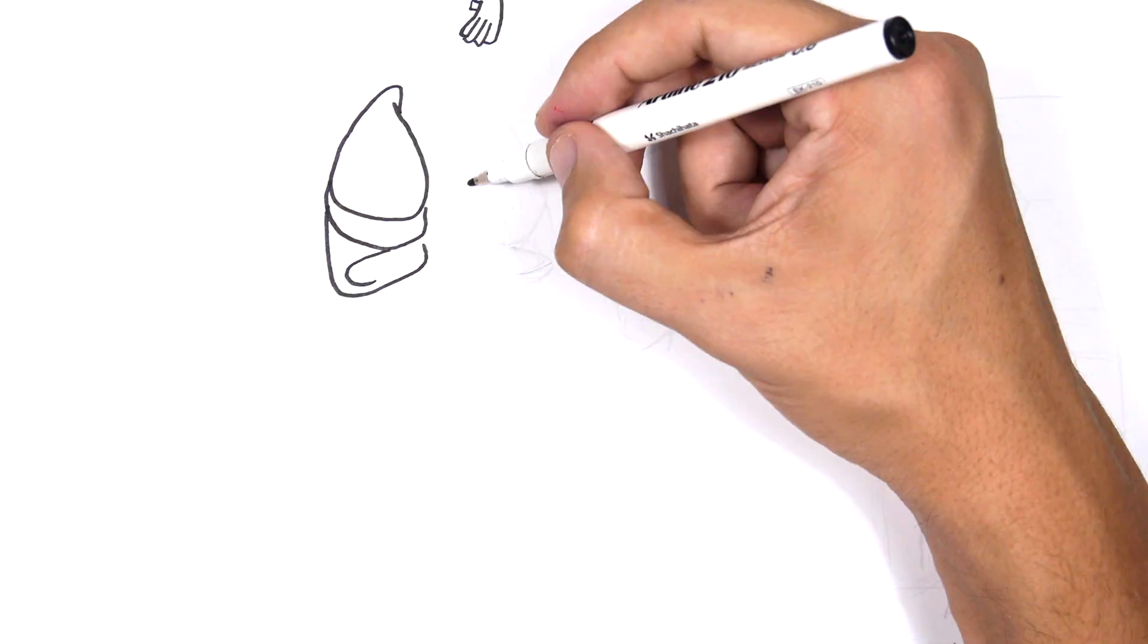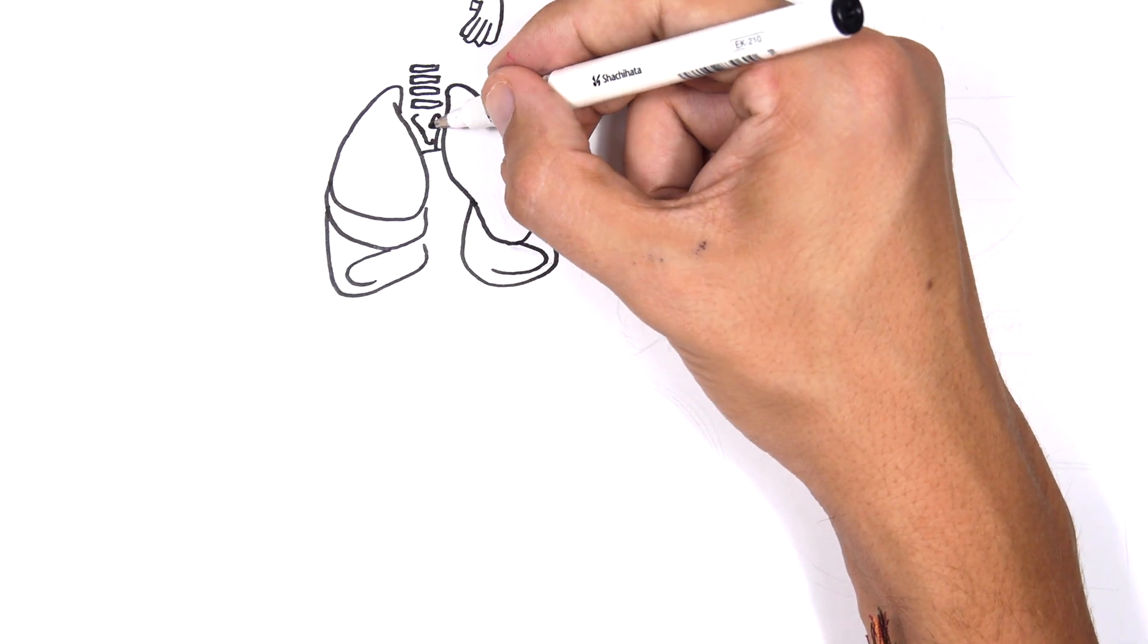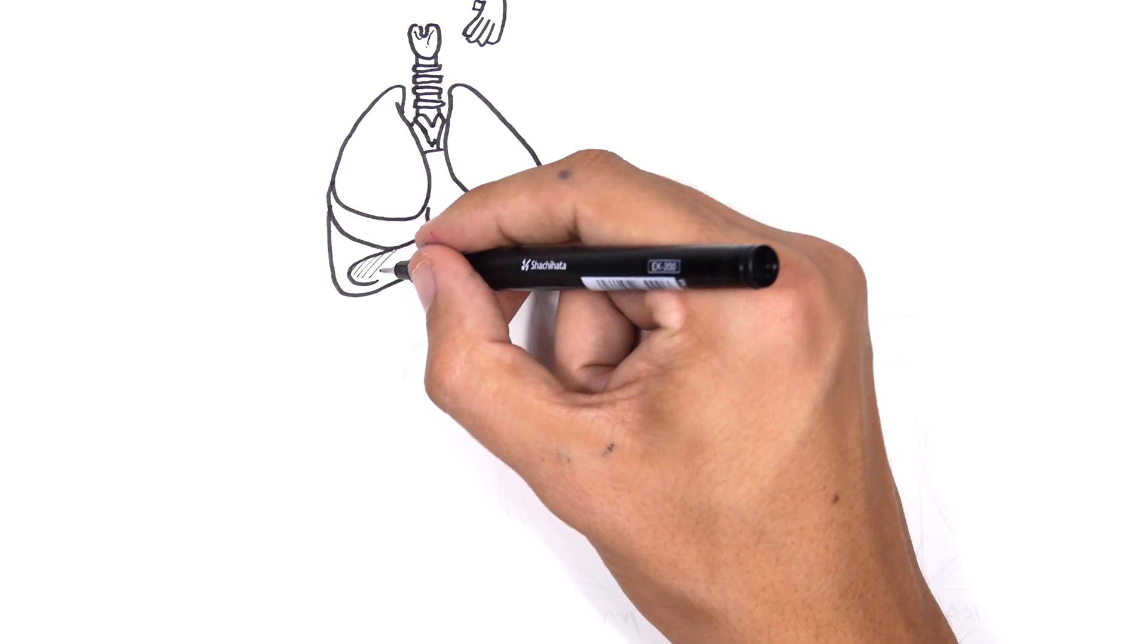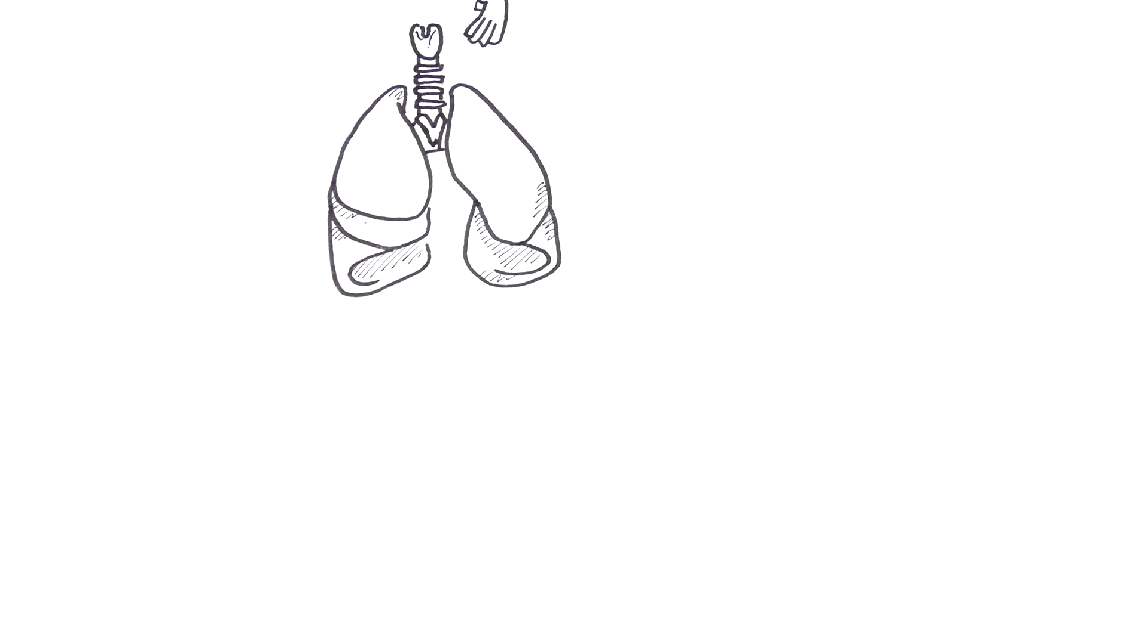Here I'm drawing the left and right lung. The trachea bifurcates into the left and right lung. The trachea gives rise to bronchi which branch into smaller and smaller bronchioles until the alveoli.